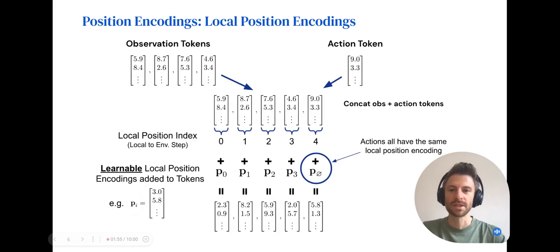To calculate local position encodings, we assign a local position index to each observation embedding vector. This index is its relative index within the environment time step. These position indices are then used to lookup learnable position encodings which are added to the observations. It's important to note that we do not add local position encodings to actions.